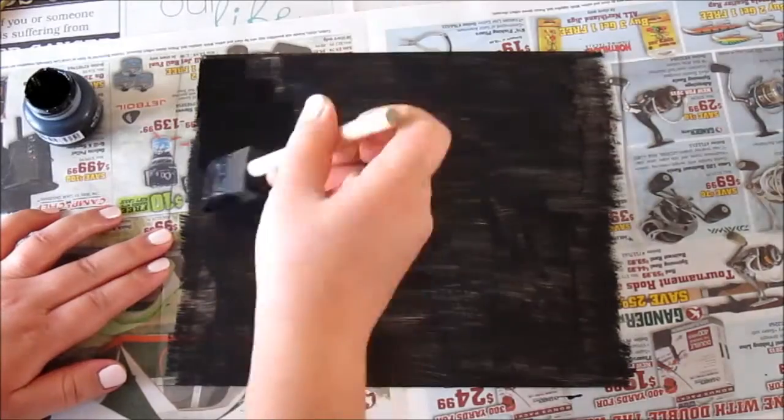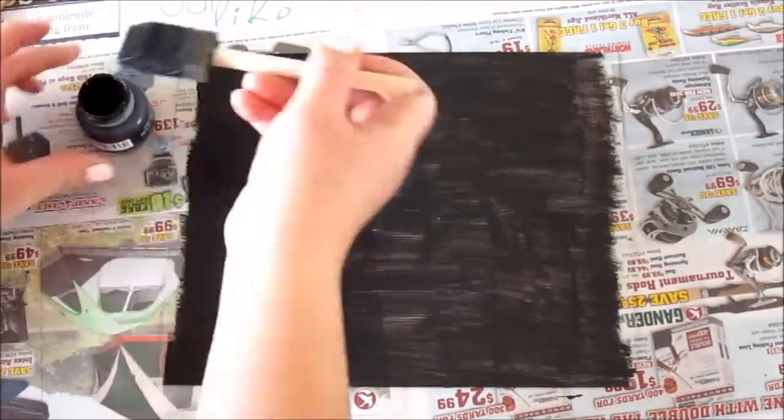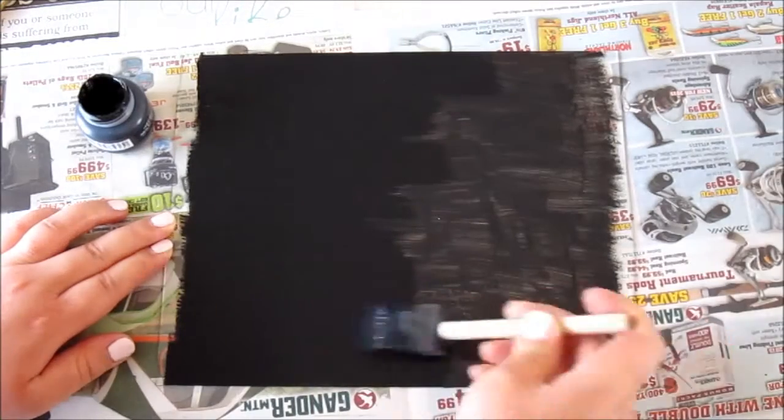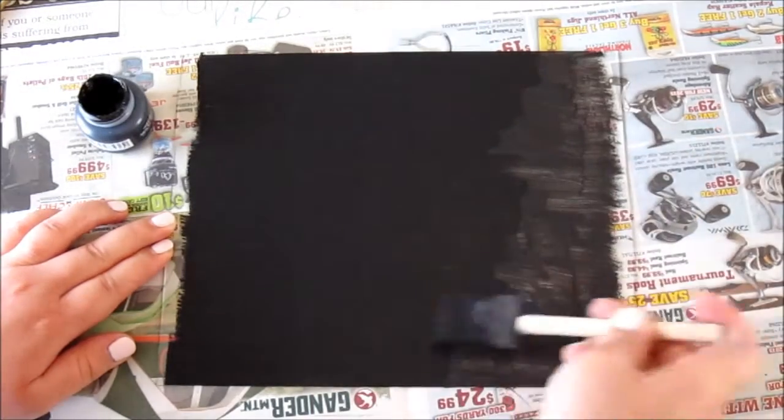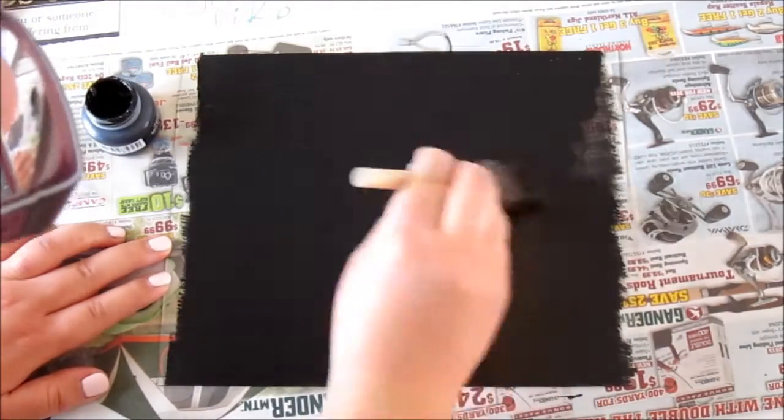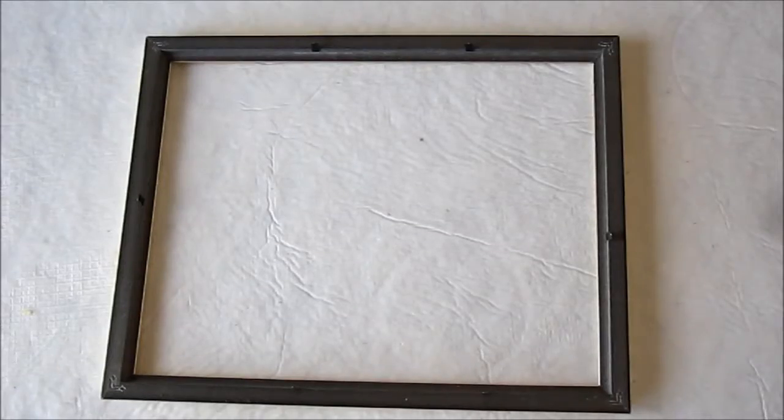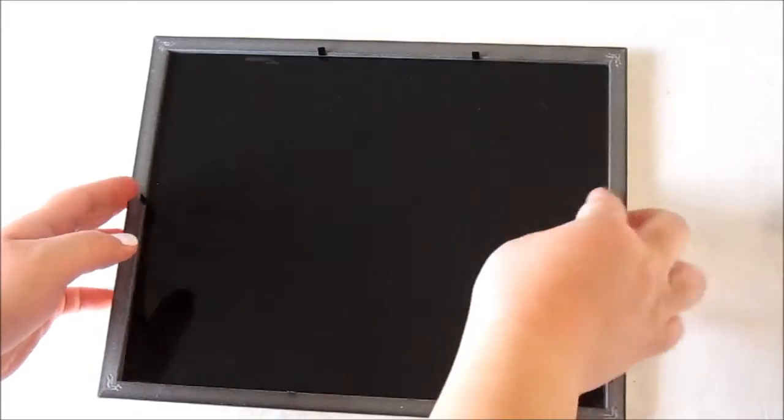Go ahead and add another layer of chalk paint. Give it 15 to 20 minutes to dry again. Now that it's completely dried place the glass back into the frame.